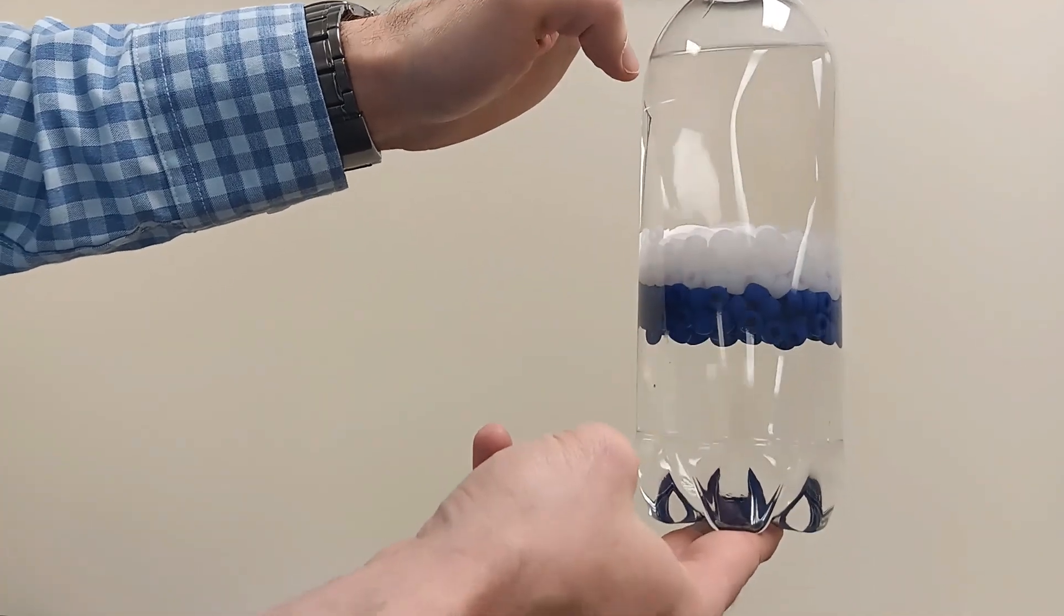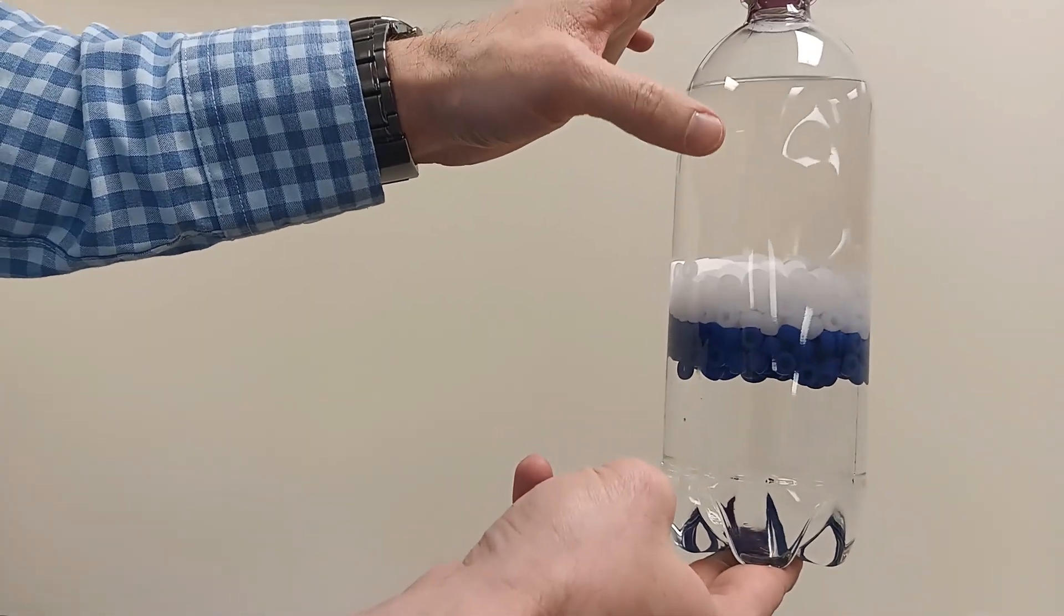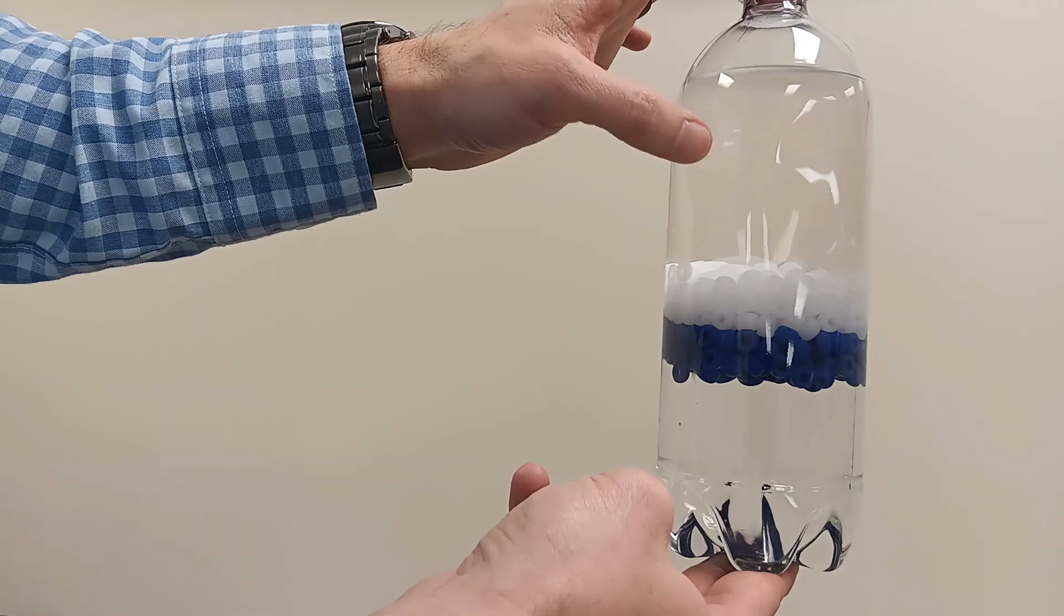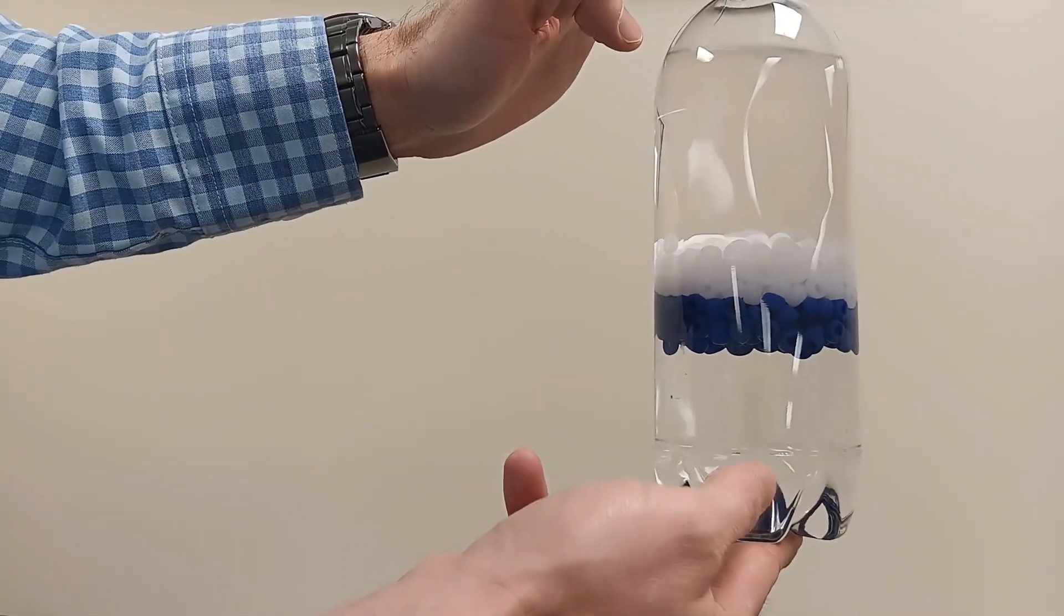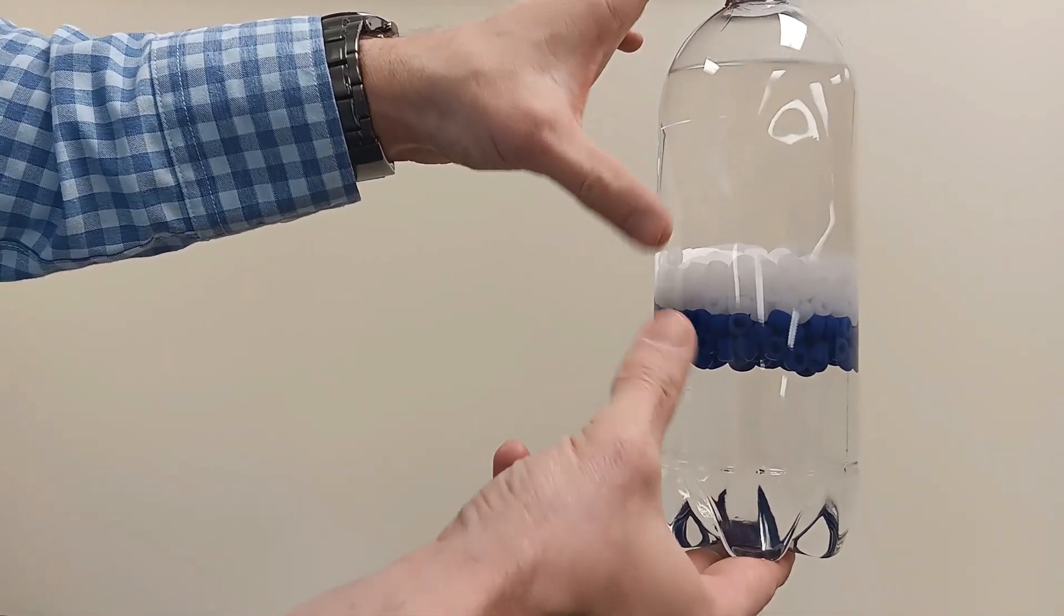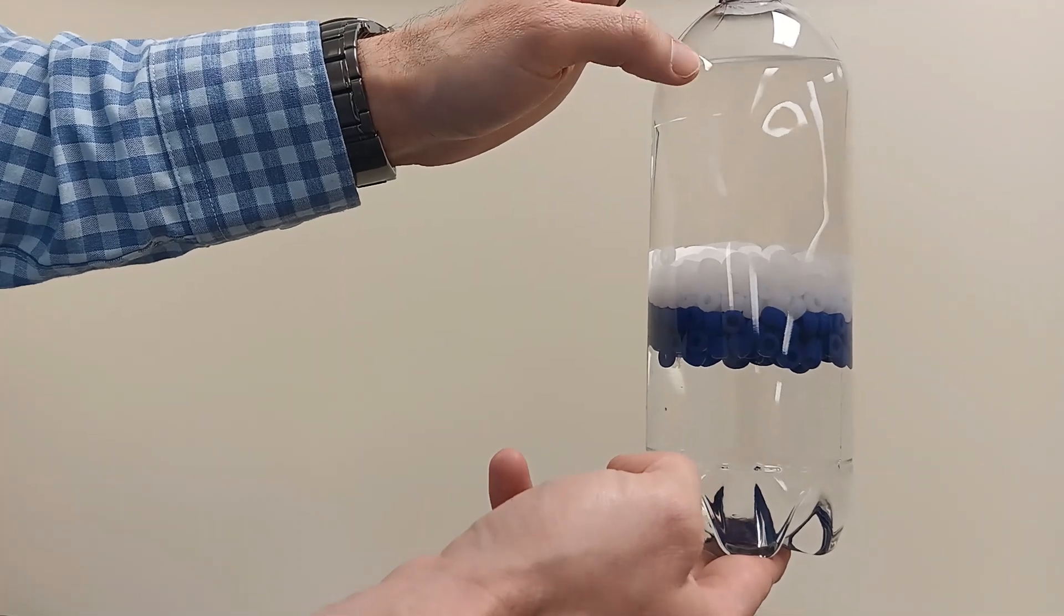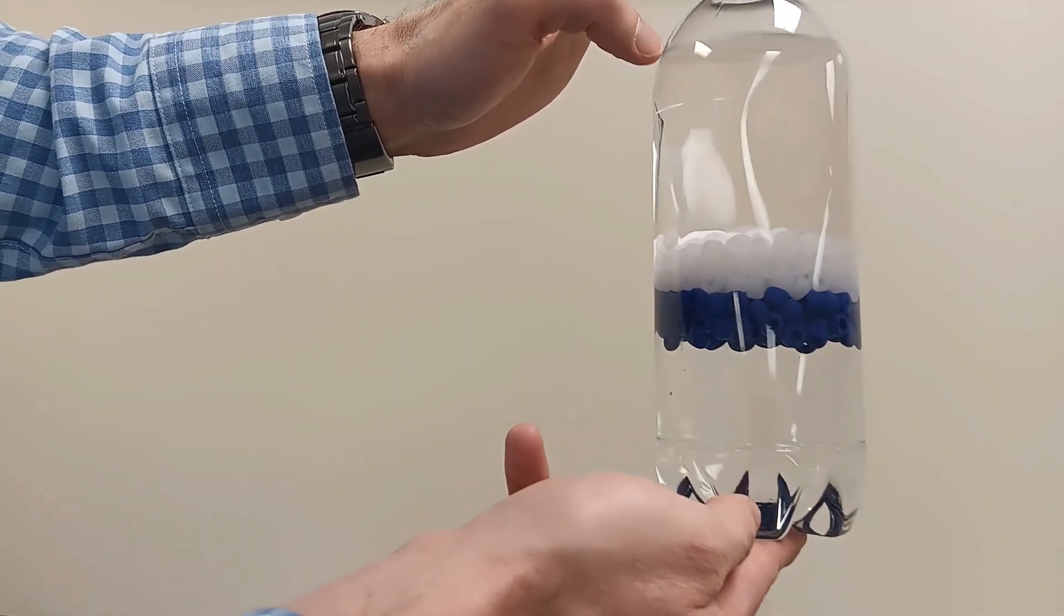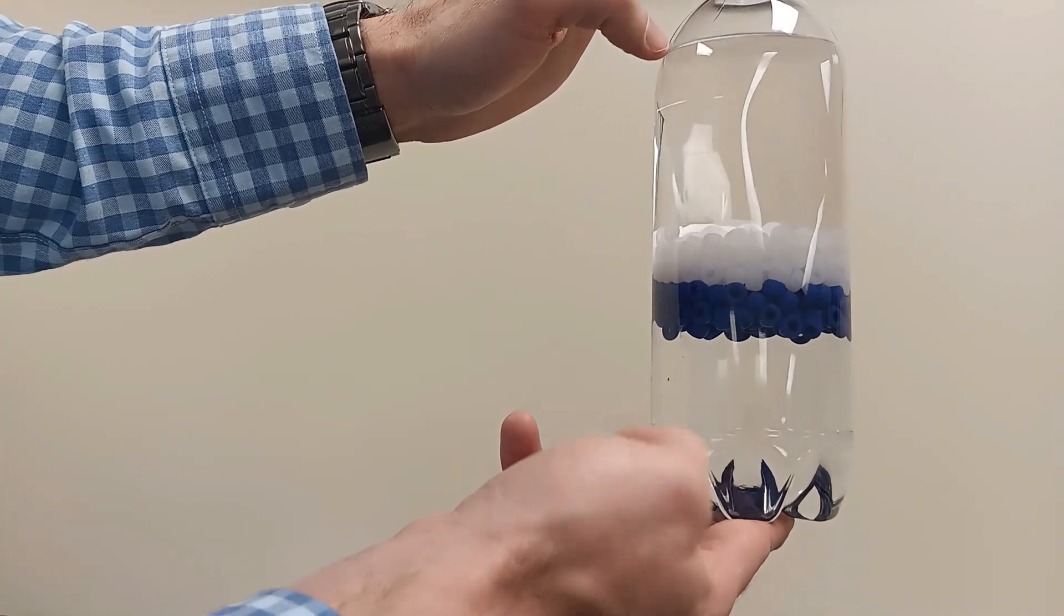Really we have two liquids inside of this bottle. We have isopropanol or rubbing alcohol on top and salt water on the bottom. And when it was all mixed together, the white beads were less dense than that mixture. They floated and the blue beads were more dense. So they sank to the bottom.